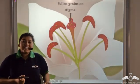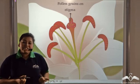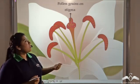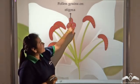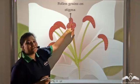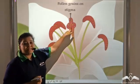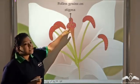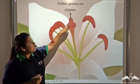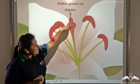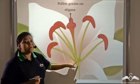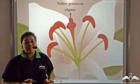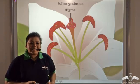Pollination ensures that the pollen grains fall on the stigma of the carpel. Now how do these pollen grains journey into the ovary that contains the ovule? Let us see.